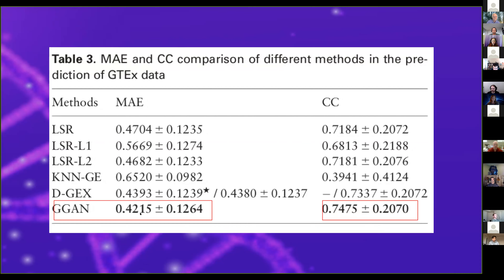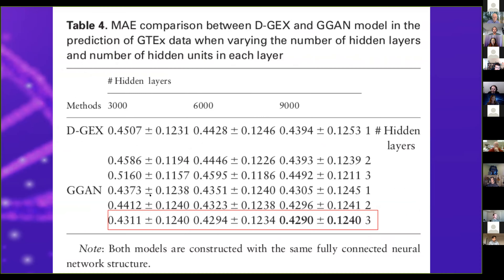They also used the same training on GEO data and tested on completely different data, finding it still performed fairly well — only about a 5% difference compared to the deep model, on data it was not trained on. They then did optimizations, playing around with removing or adding hidden layers or units, and found that about three hidden layers was optimal overall for the generative GAN.